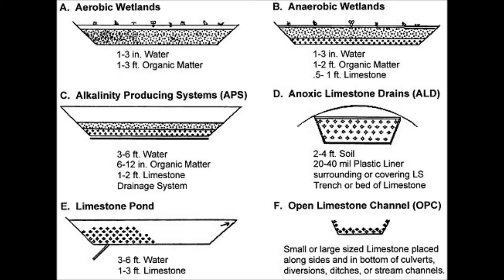There are also ways to passively treat acid mine drainage that utilize naturally occurring chemical and biological processes to purify contaminated water. These passive treatments include constructed wetlands, limestone ponds, and open limestone channels. Constructed wetlands mimic the water-saturated soils and ponded water of natural wetlands and are built by using shallow excavations filled with gravel, soil, and organic matter.